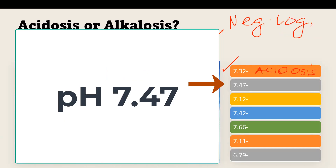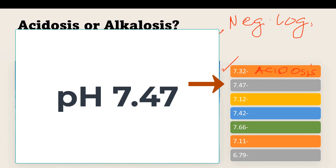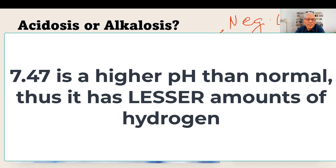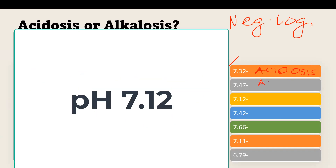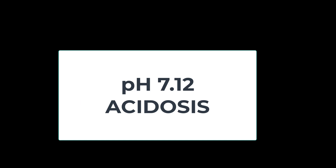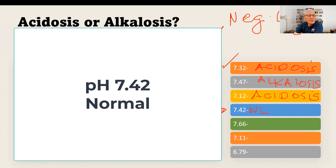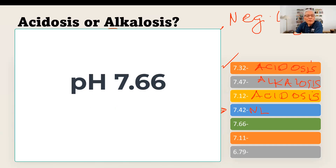Now let's look at 7.47. That is an increase in pH — does that mean more hydrogen or less hydrogen? Less hydrogen. If there is less hydrogen, what do we call that? Alkalosis. How about 7.12? Acidosis. How about 7.42? Normal — it is within the normal range, and therefore there is acid-base balance. How about 7.66? Alkalosis — too high a pH, and therefore less hydrogen.